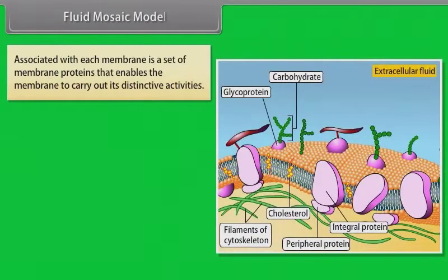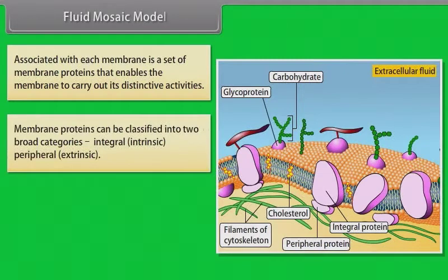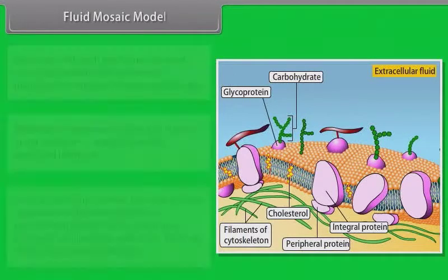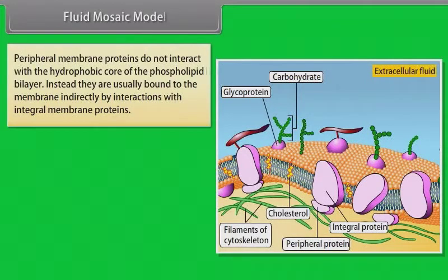Associated with each membrane is a set of membrane proteins that enables the membrane to carry out its distinctive activities. Membrane proteins can be classified in two broad categories: integral (intrinsic) and peripheral (extrinsic). Integral membrane proteins have one or more segments that are embedded in the phospholipid bilayer, having one or more covalently attached fatty acid chains that help them anchor to the membrane. Peripheral membrane proteins do not interact with the hydrophobic core of the phospholipid bilayer; instead, they are usually bound to the membrane indirectly by interactions with integral membrane proteins.